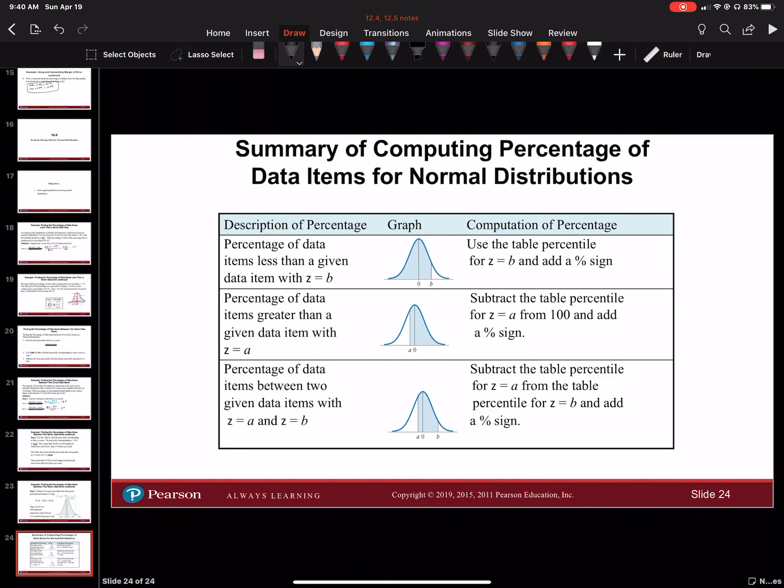This is a summary of computing the percentage of data items for a normal distribution. For the percentage of data items less than a given data item with z equal to b, use the table percentile for z equal to b then add a percent sign. You just look at the table, find what you get for the z-score, and add a percent sign.